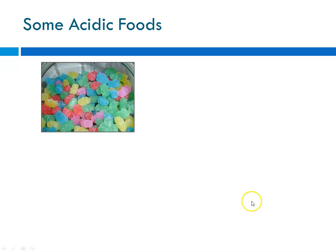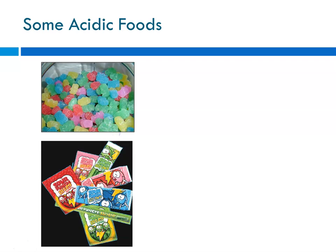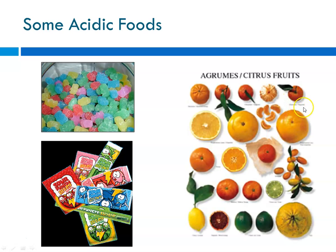Some acidic foods that you might think of are these gummy sour things. I don't know what you call them. All of these various sour candies. And then here's a nice chart that shows citrus fruits. Your basic oranges and tangerines and grapefruits and lemons and limes. And I think these are kumquats. Anywho, those are some examples of some acidic foods.